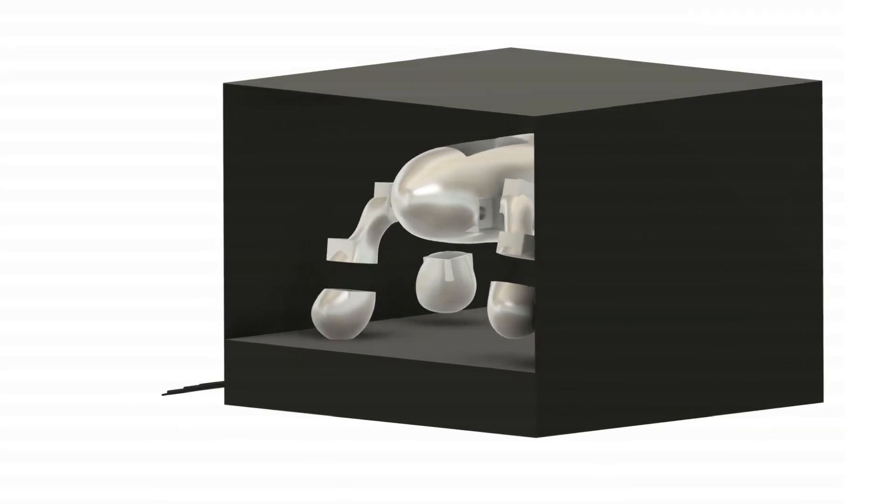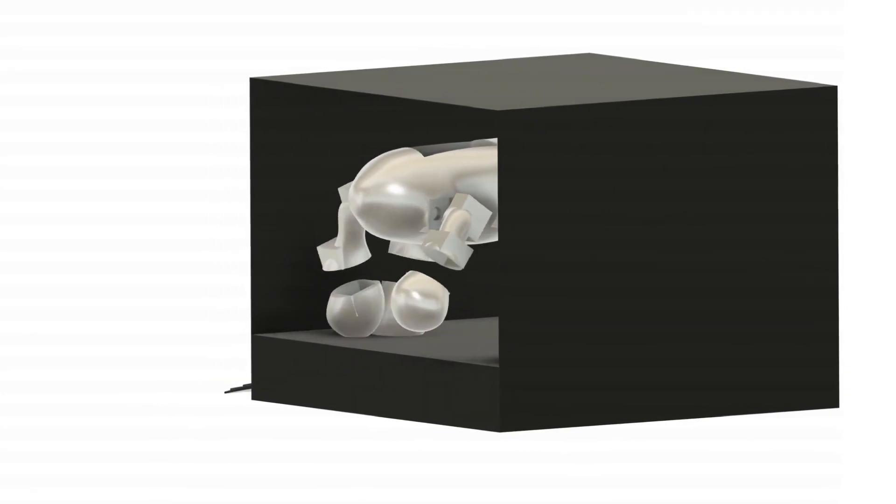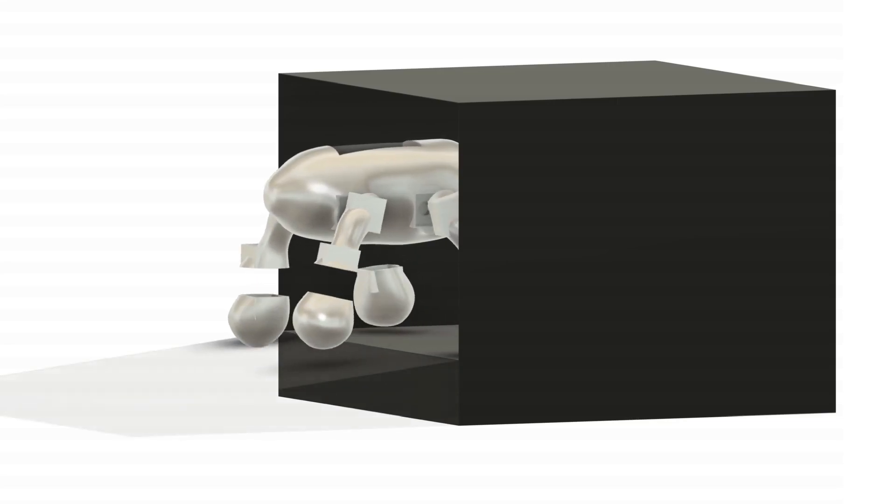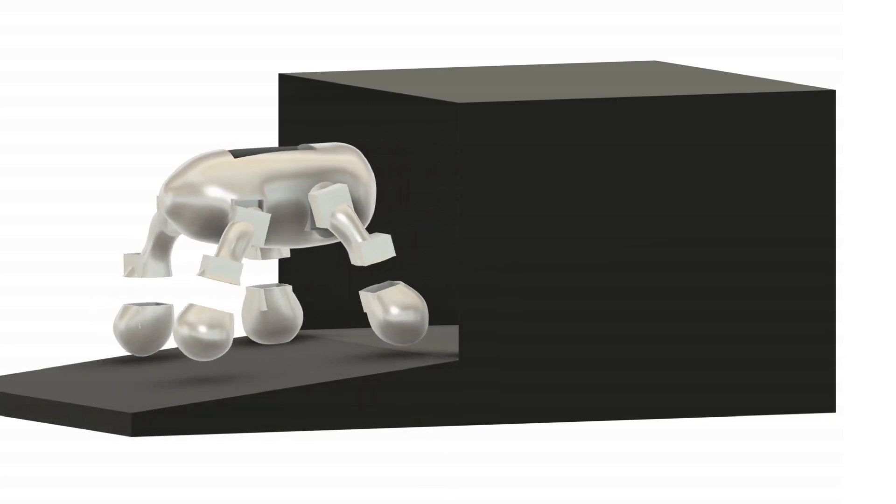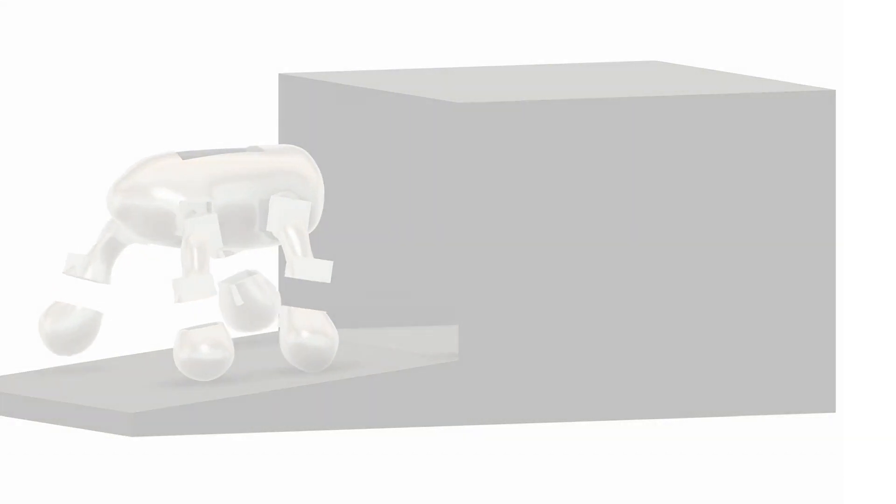Our text-to-robot pipeline leverages generative AI to automate the robot design process, allowing anyone to build a quadrupedal robot resembling any animal, mythical creature, or inanimate object.